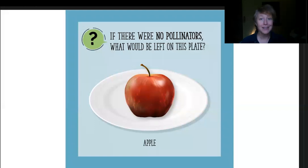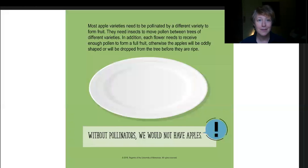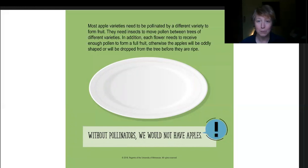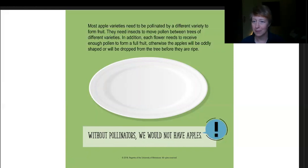What about apples? If there were no pollinators, what would we have left on our plate? It's actually the same kind of thing — with most apples, they need to be cross-pollinated with a different variety, and that pollen needs to be moved to trees of different varieties. We really do need bees and other pollinators to help move that pollen around. Besides just moving pollen, a lot of pollination needs to happen, since partial pollination can result in oddly shaped fruits or ones that drop from the tree before they fully ripen.